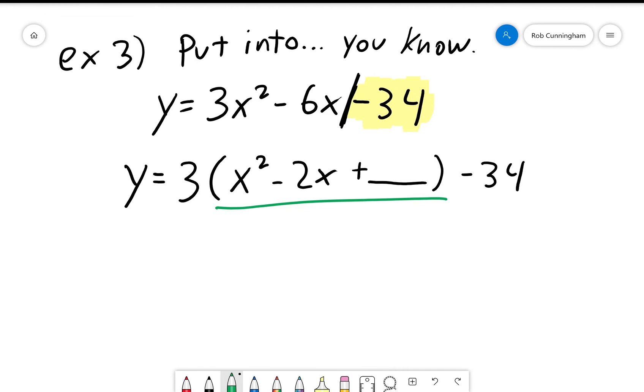So to find that completed square, I take this middle number, negative 2, divide it by 2 to get negative 1, and then I square it to get positive 1. Now again, I'm not actually just adding 1—I'm actually adding 3 times 1. So to compensate for that, I'm going to subtract 3. Again, I can't just add something to an equation without compensating for it somehow. If I'm adding 3 with one hand, I have to take away 3 with the other hand.